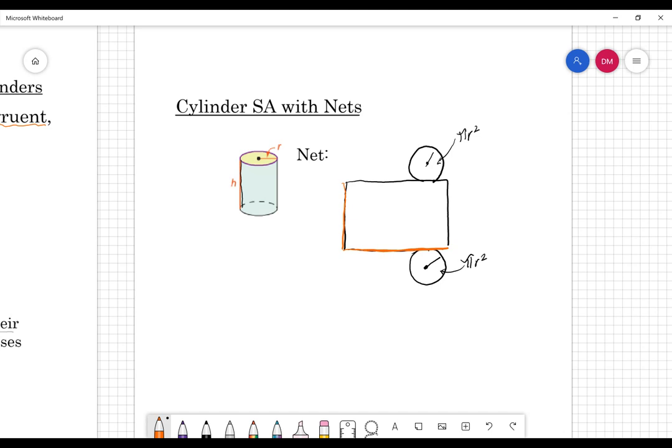So in order to find the base of my rectangle, really what I'm doing is I'm finding the circumference of my circle. How do we do that? Pi d or 2 pi r.